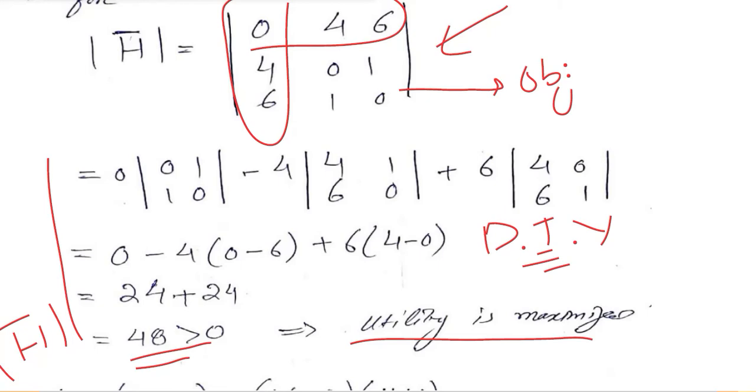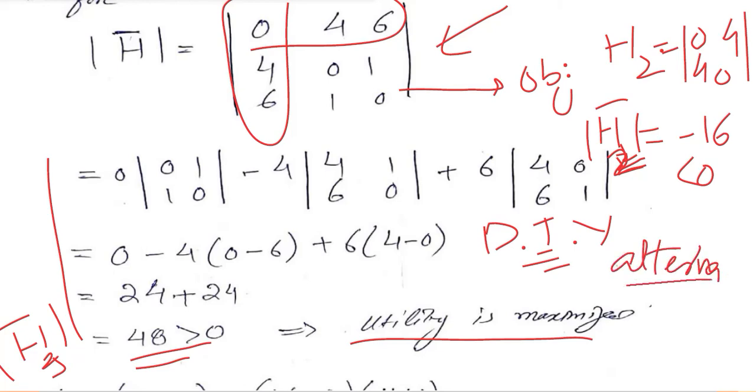And that means that we are dealing with the maximized value. This maximum gets confirmed when we see that there are alternating signs. For example, in this case, H2 will be equal to 0, 4, 4, 0. When we solve it, we get minus 16, which is less than 0. So the sign of the second principal minor is negative and the third principal minor has a positive value. If the alternating signs are there of the principal minors, then it means that we are dealing with the maximum.